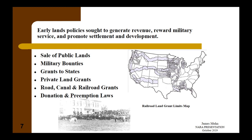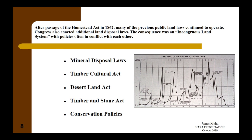After passage of the Homestead Act in 1862, many previous land laws continued to operate, and Congress enacted additional disposal laws. The consequence was, as historian Paul Wallace Gates has called it, an incongruous land system with policies often in conflict with each other. Among the later laws were those disposing of gold, silver, coal, oil, and gas. The Timber Culture Act gave 160 acres to people who planted a certain number of trees. The Desert Land Act gave lands to people who irrigated them. The Timber and Stone Act disposed of lands chiefly valuable for those resources, and conservation policies like the National Forest later took lands out of settlement.